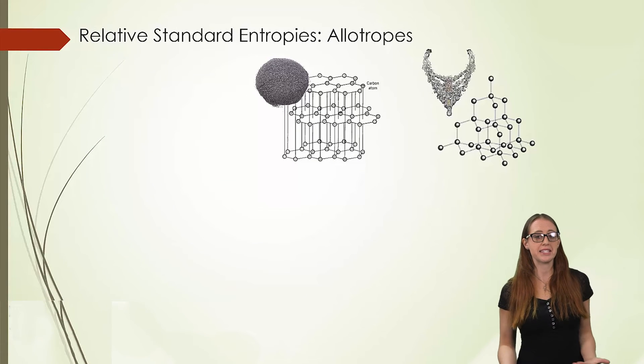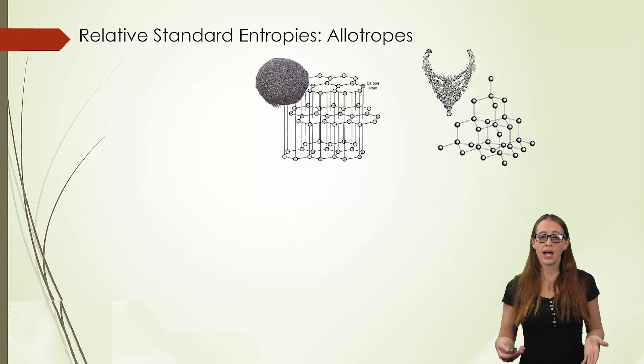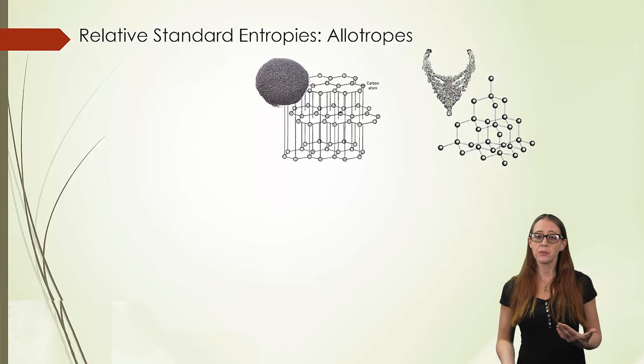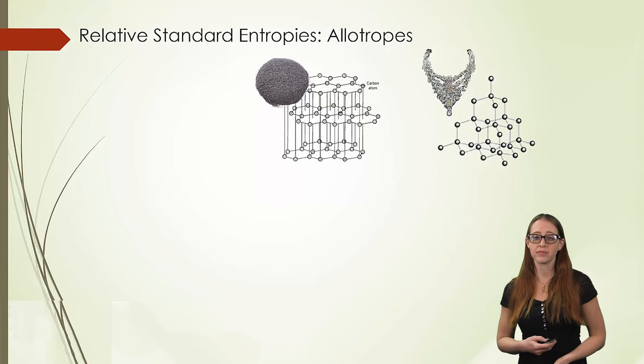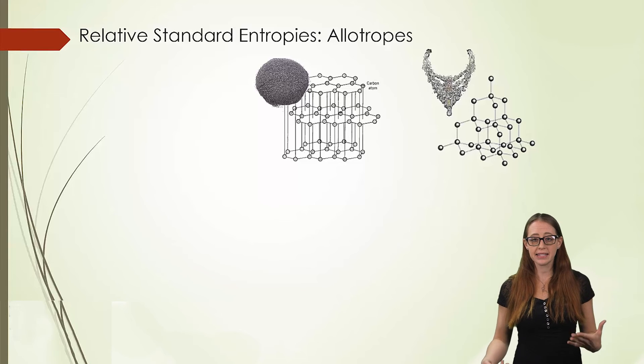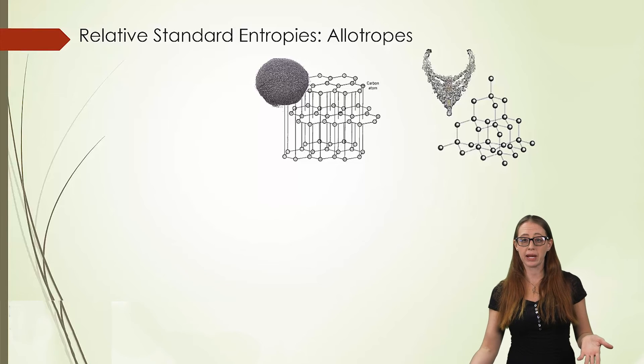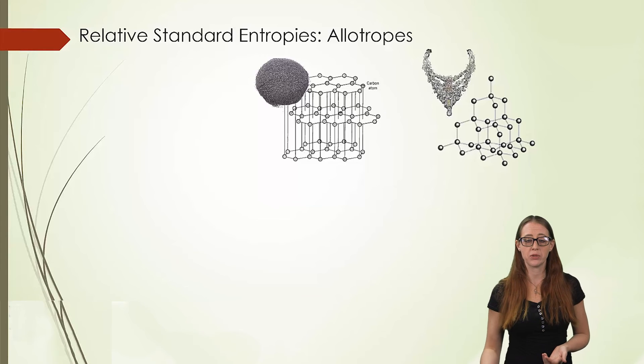We also need to consider allotropes. As an example of a common allotrope that we've used in previous examples in this class, we have graphite and we have diamond. Both are forms of solid carbon. Based on the idea of entropy being more random, which do you think will have the most entropy? Take a moment, looking at the structures, and see if you can think about this. Which one is more random?